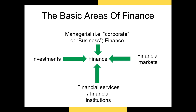A financial market is a market in which people trade financial securities and derivatives, such as futures, options, stocks, and bonds. The stock exchanges you have undoubtedly heard of, like the New York Stock Exchange or the NASDAQ, are examples of financial markets which allow investors to trade stocks and bonds.